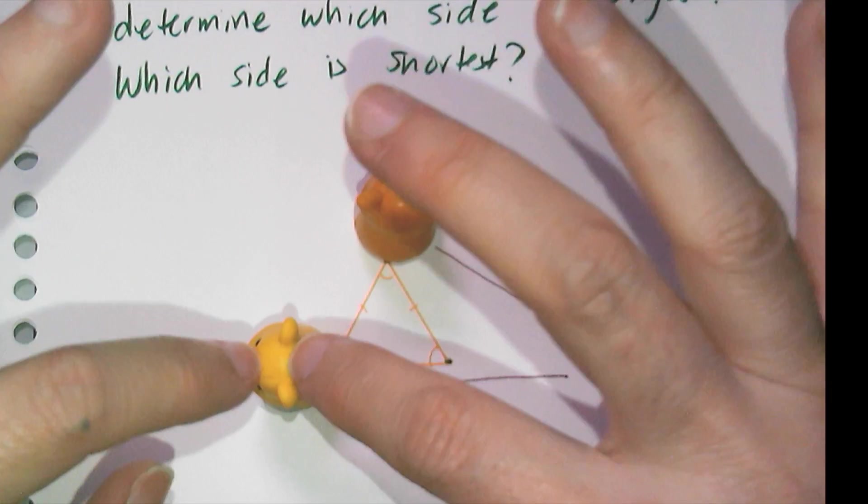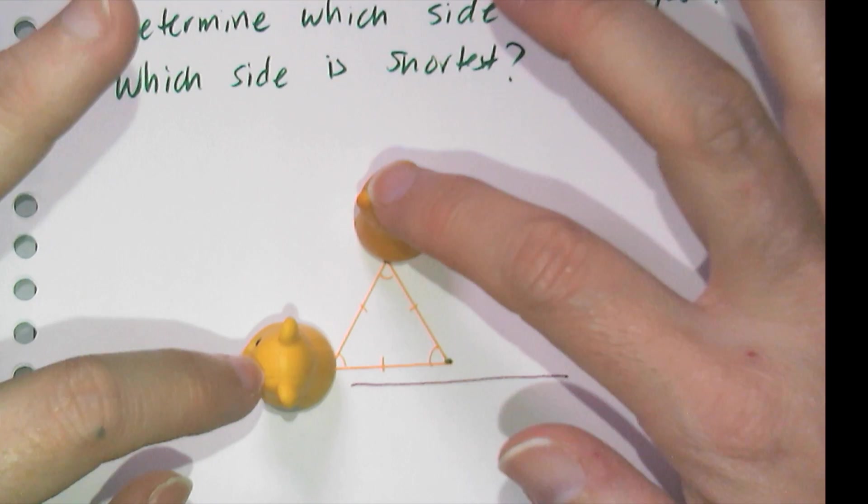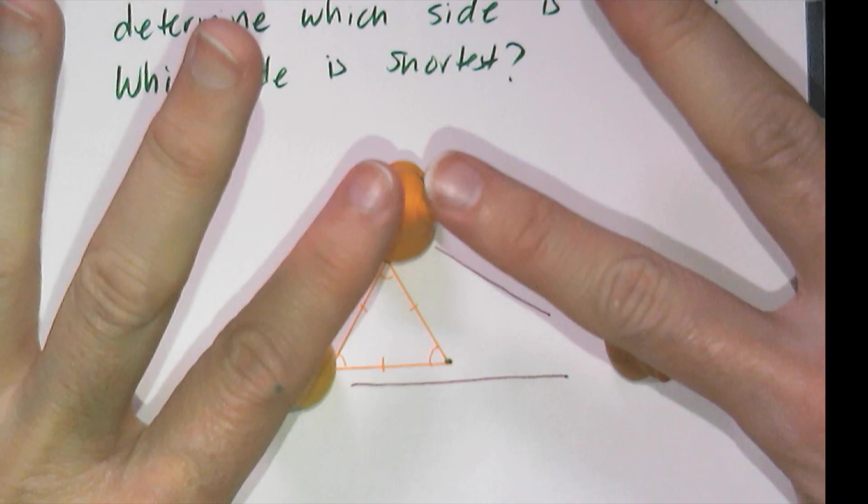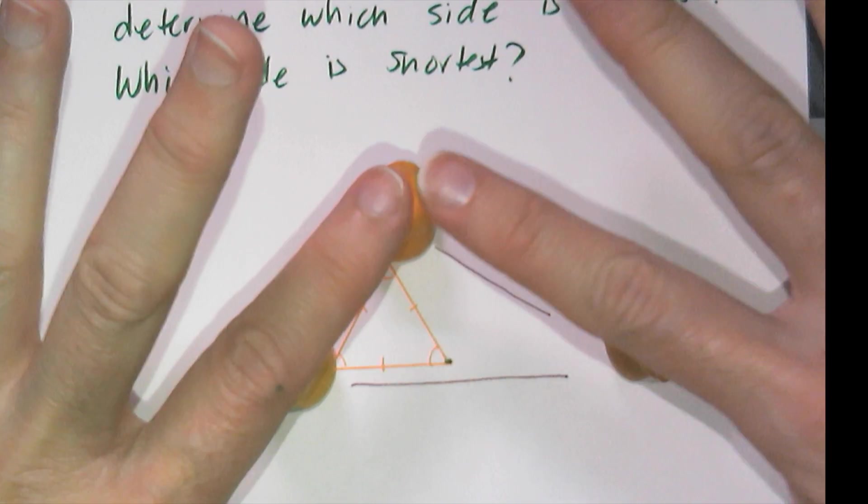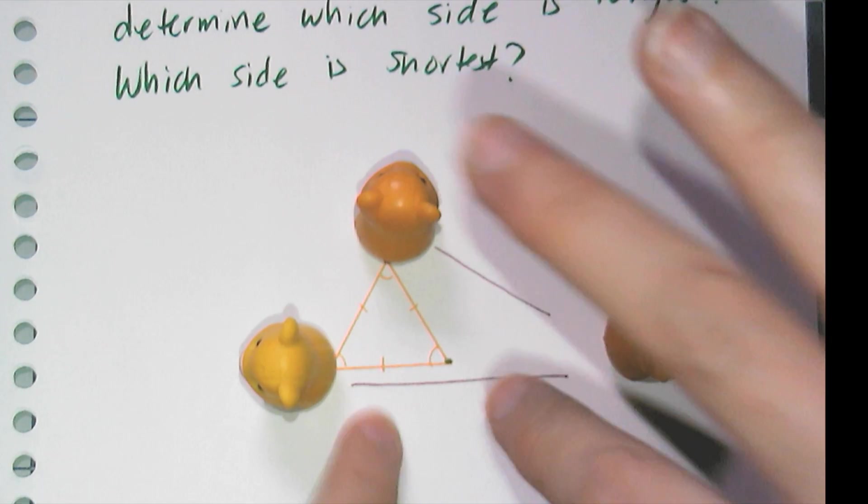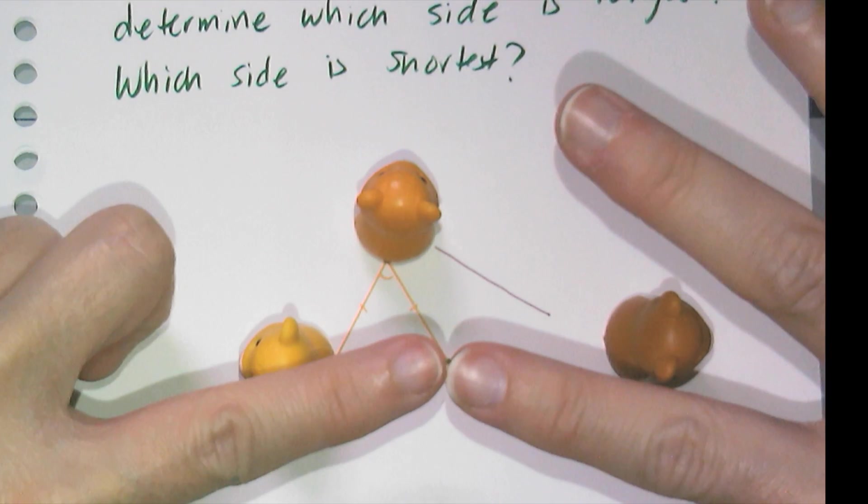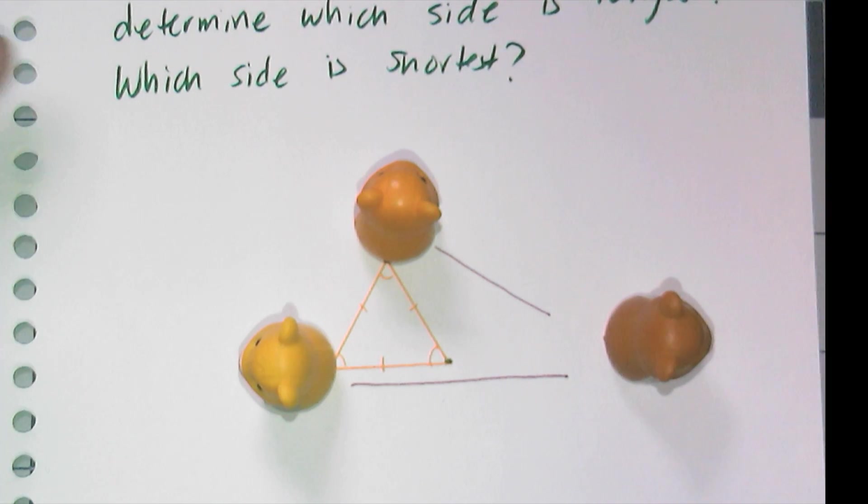And this angle here that's formed with Cheddar as the vertex, that is a rather large angle. And it looks like the side opposite Cheddar is the largest side. So it seems to me that the largest side of a triangle might just be opposite the largest angle.